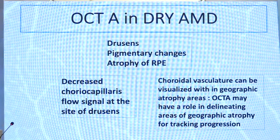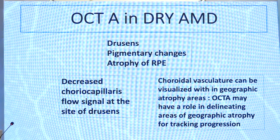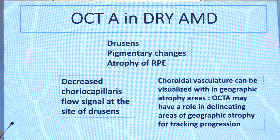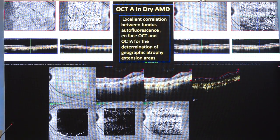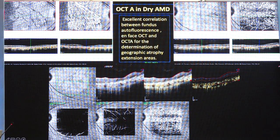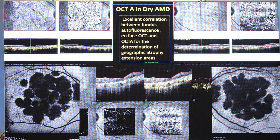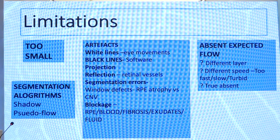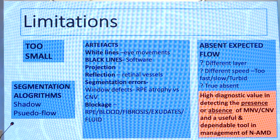Sometimes in chronic CSR also you see similar kinds of pictures. OCT angiography has a role in assessing the progression of dry macular degeneration also. The choroidal vasculature can be visualized within the geographic atrophic areas, and OCT angiography has a role in it. There is excellent correlation between fundus autofluorescence, en-face OCT, and OCT angiography for the determination of geographic atrophy extension area.